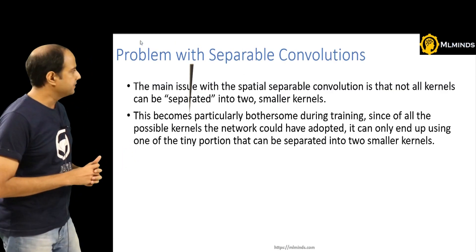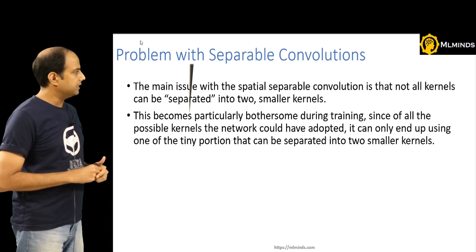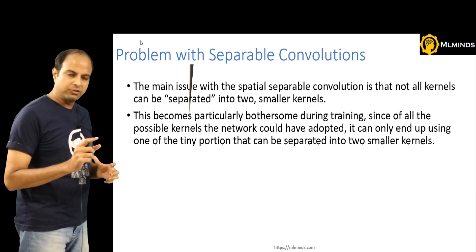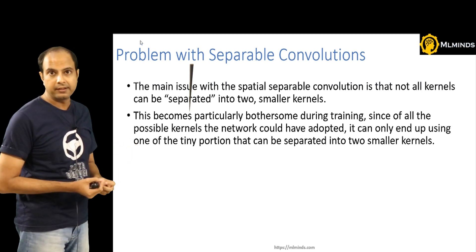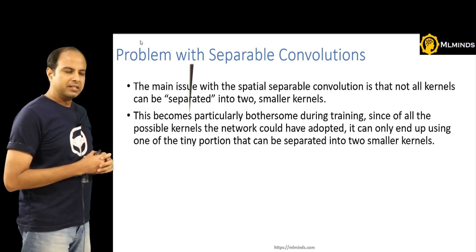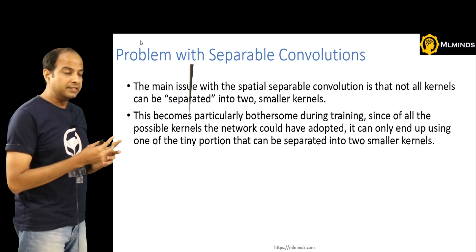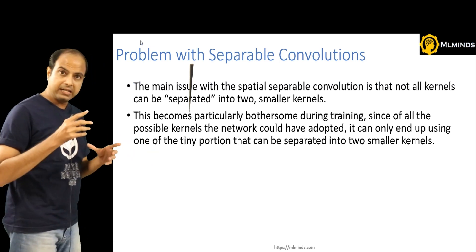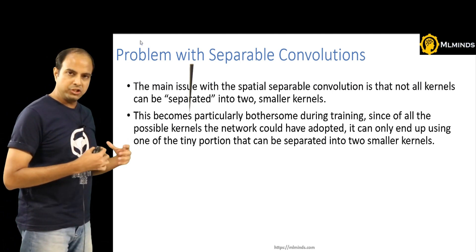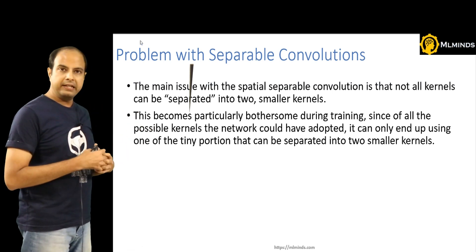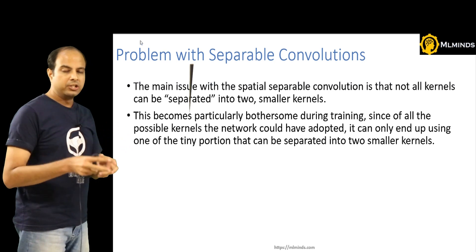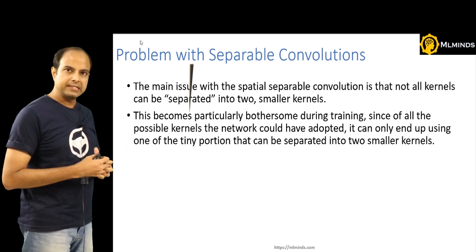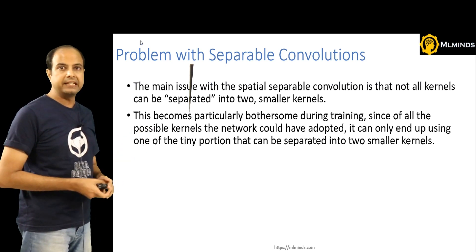There is a problem with spatial separable convolutions though. You can only do this with certain kinds of kernels — those which can actually be decomposed or separated into two smaller kernels. This becomes particularly bothersome during training: of all possible kernels the network could learn, it can only use a tiny portion that are separable. Normally the network could learn any 3×3 matrix, but using 1D kernels forces it to learn only decomposable kernels. That is one problem with separable kernels.